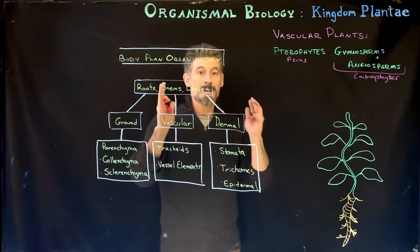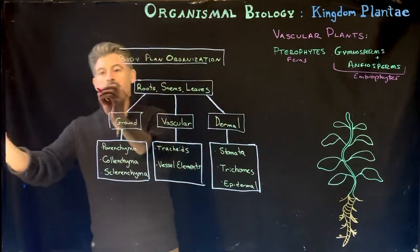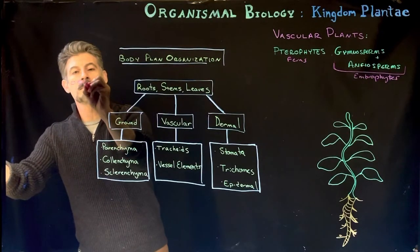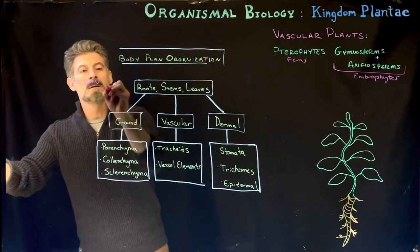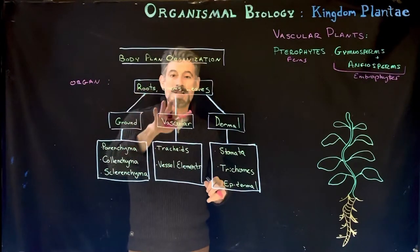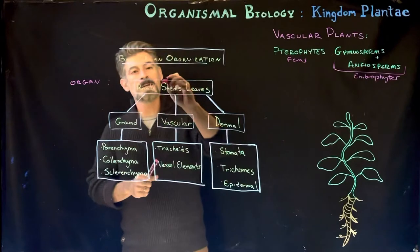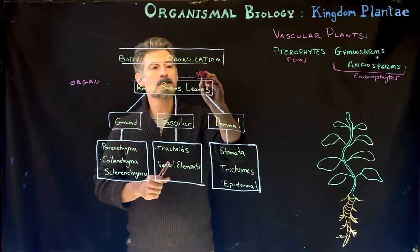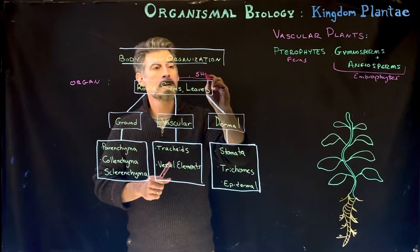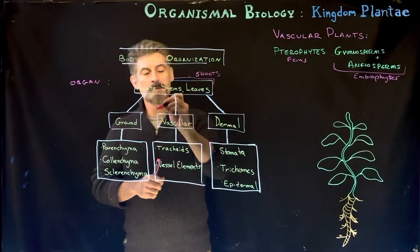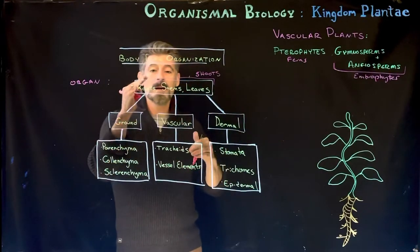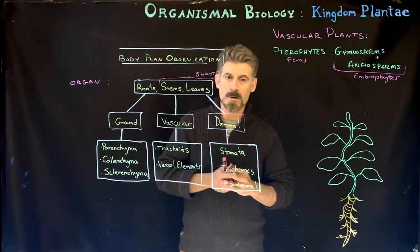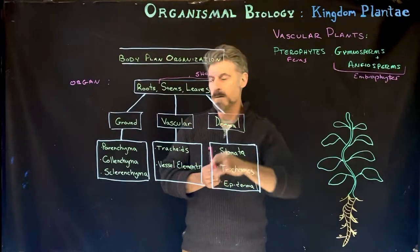Plants have essentially these main organs at the organ level of organization: roots, stems, and leaves. Collectively, the stems and leaves are referred to as the shoots. So we have roots and shoots — the stems and leaves make up the shoots — and flowers and fruits would also be part of the shoots.